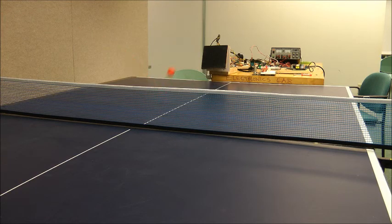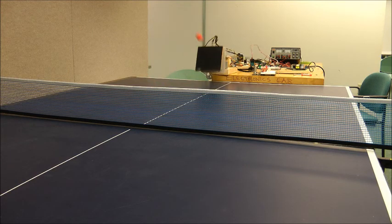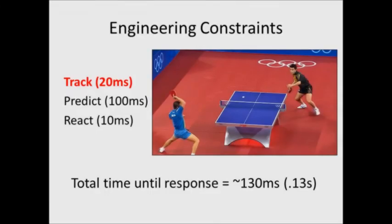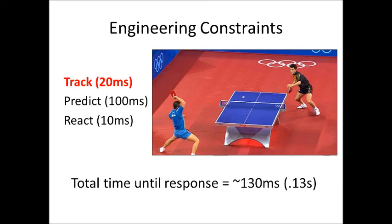So, I guess that wraps up how we developed our robotic system. And just to go back to our engineering constraints, we learned how to track the ball in 20 milliseconds, predict where it's going to be in 100, and react in 10 milliseconds.